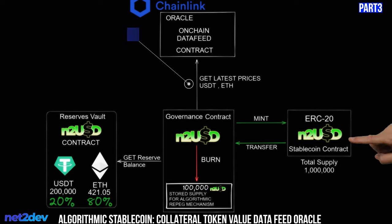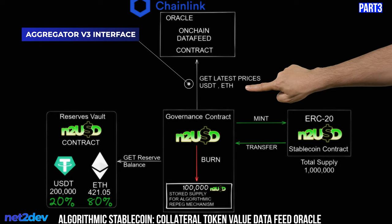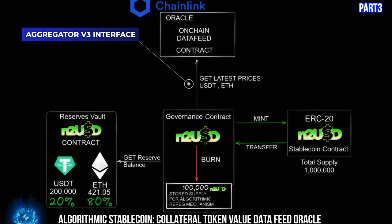We'll build a smart contract that fetches data feed prices for a bunch of tokens. I'll include a function that allows changing the data feed smart contract address — we're just talking to a smart contract like any other blockchain interaction, through the AggregatorV3 interface, which is the Chainlink interface giving us access to the data feeds. Let's jump in and build it quickly.